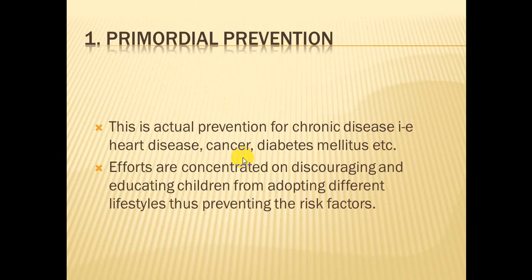Primordial prevention is the actual prevention for chronic diseases such as heart disease, cancer, and diabetes. Measures taken for these chronic diseases are known as primordial prevention. It is concerned with discouraging and educating children from adopting different lifestyles, thus preventing the risk factors of the disease.